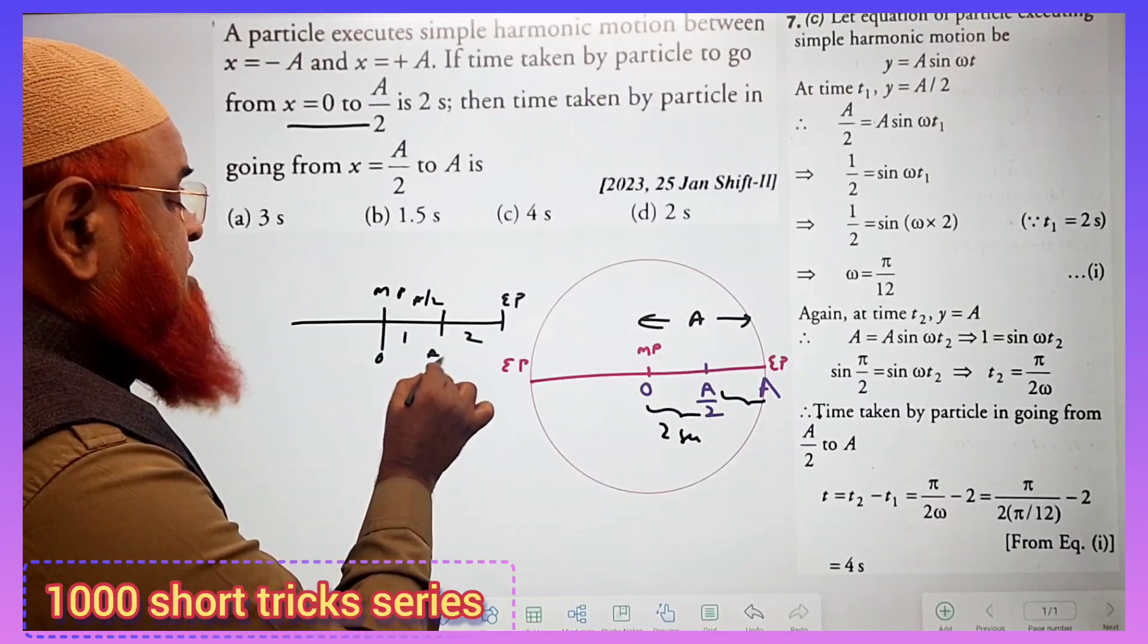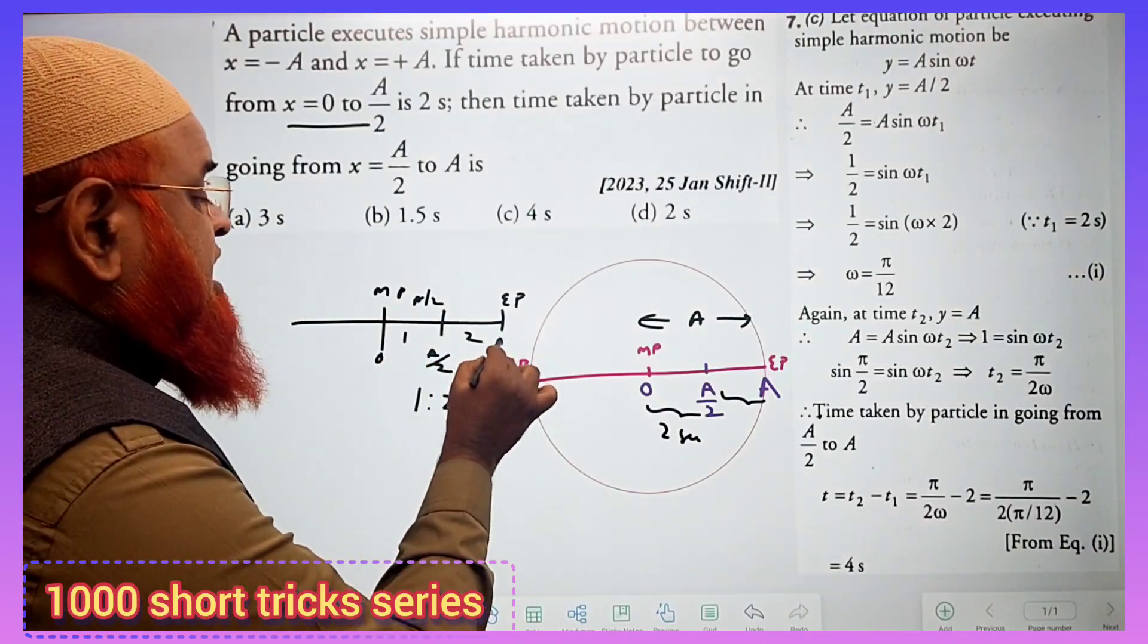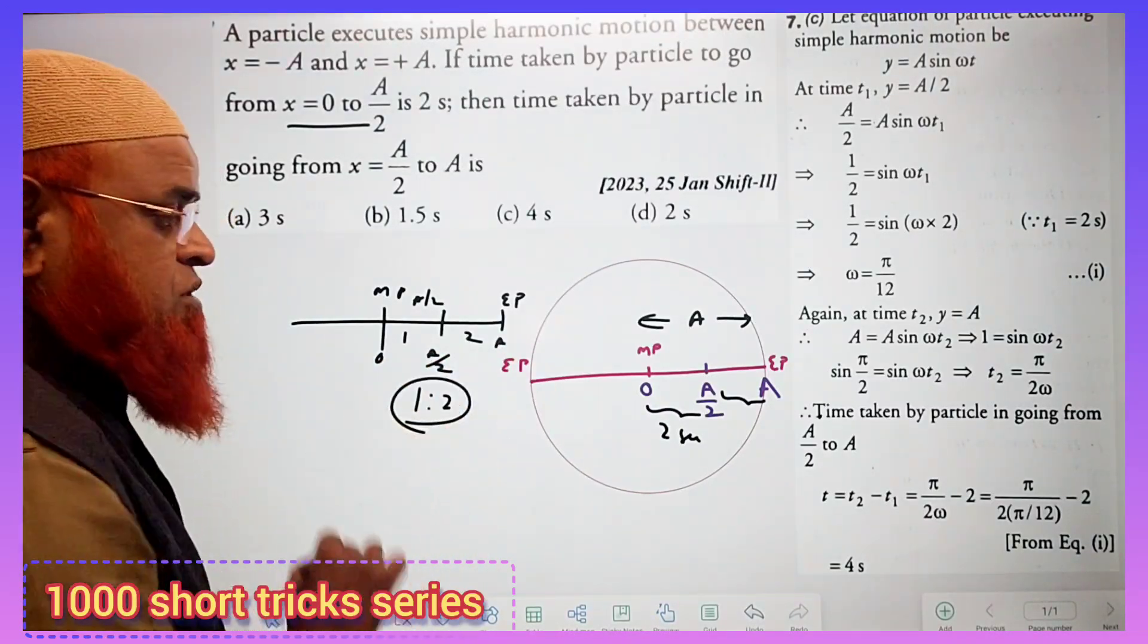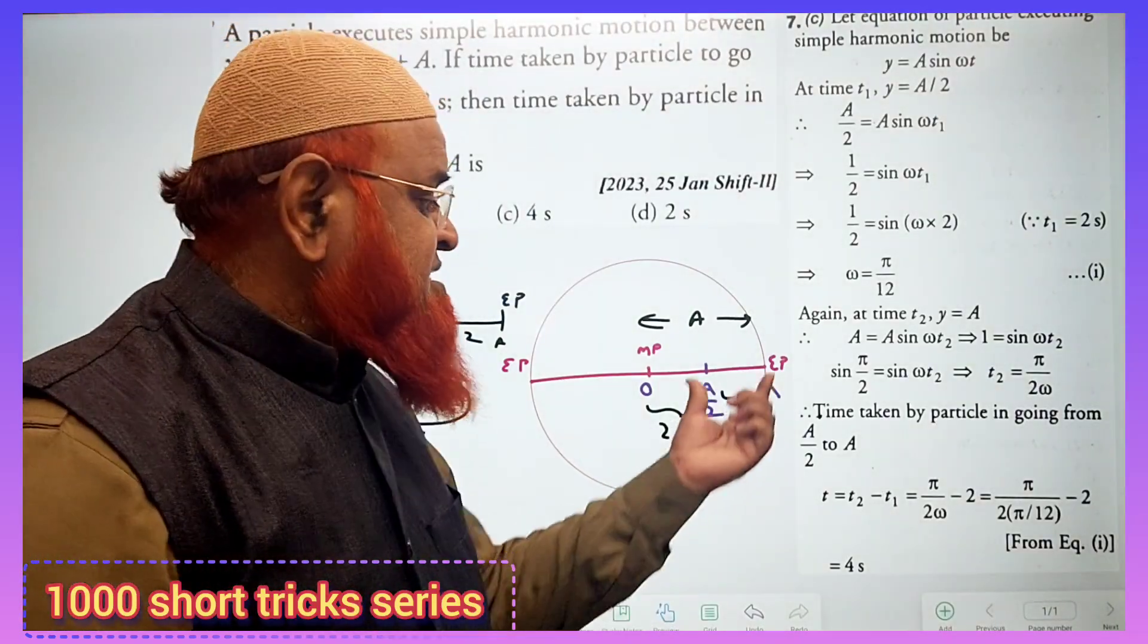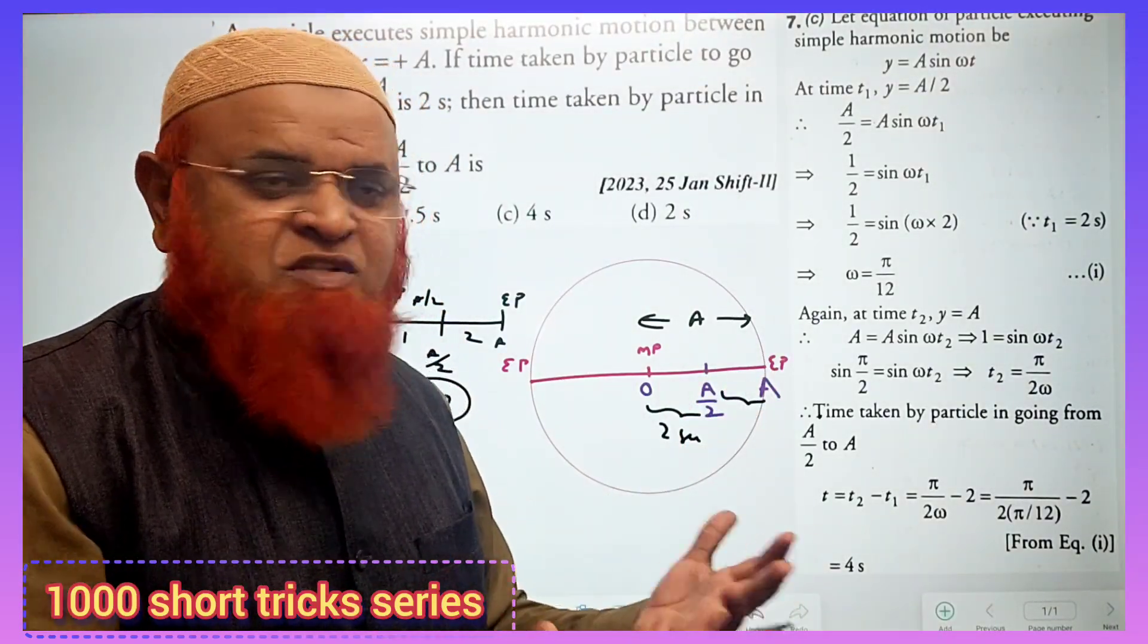0 to A by 2 and A by 2 to A - the ratio is going to be 1 is to 2. And yes, given this as 2 seconds, then the remaining will be double, that is 4 seconds.